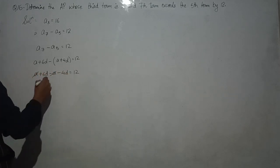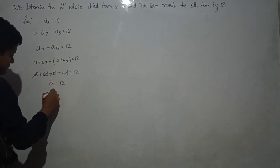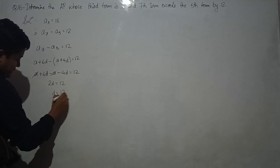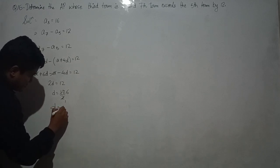A cancels, 6D minus 4D equals to 12. 2D equals to 12. D equals to 12 by 2. So we got the value of D equals to 6.